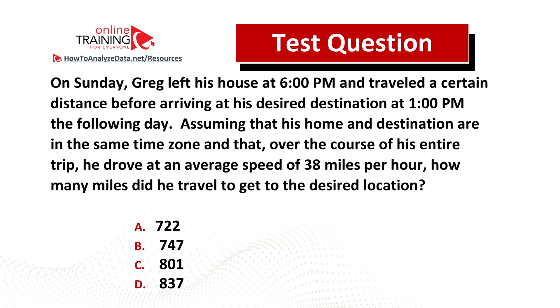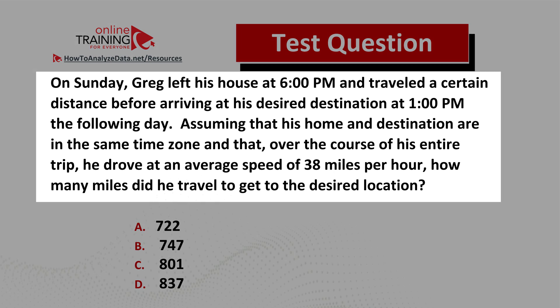And now here is the question for you to try. On Sunday, Greg left his house at 6 PM and traveled a certain distance before arriving at his desired destination at 1 PM the following day. Assuming that his home and destination are in the same time zone and that over the course of his entire trip he drove at an average speed of 38 miles per hour, how many miles did he travel to get to his desired destination?